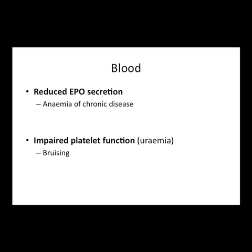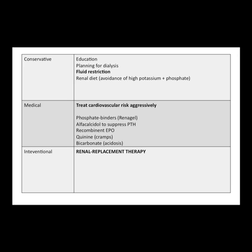Another hormonal function of the kidney is production of erythropoietin, which stimulates bone marrow to produce red cells. Patients with reduced kidney function don't produce enough, so they get a normocytic anemia of chronic disease. They also get impaired platelet function due to uremia — so they bruise very easily. And the electrolyte and acid-base problems we saw in acute renal failure — hyperkalemia and acidosis — are present in chronic renal failure too.